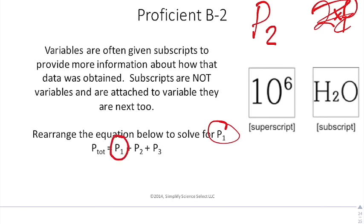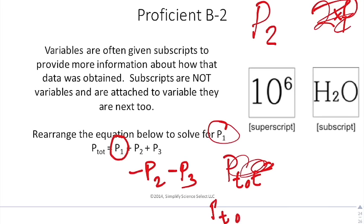When you do this, you've got to subtract P2 and you've got to subtract P3 from both sides. When you do that, you get P tot minus P2 minus P3 equals P1.